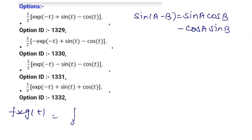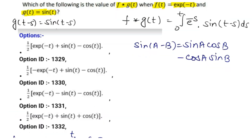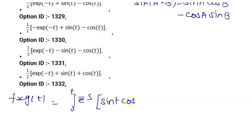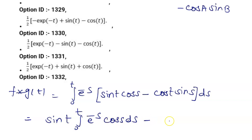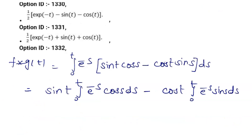By expanding and simplifying, we split this into two separate integrals: sin(t) times the integral from 0 to t of e^(-s)cos(s) ds, minus cos(t) times the integral from 0 to t of e^(-s)sin(s) ds.